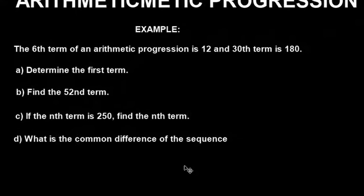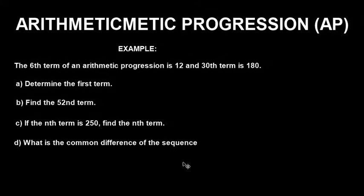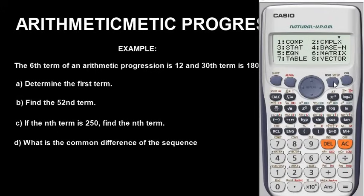Let's use the calculator to solve these problems — they are very simple with the calculator. To begin, put the calculator in statistics mode by pressing the Mode button, then go for category 3 which represents statistics — press 3 — and go for option 2, which represents AP — press 2.